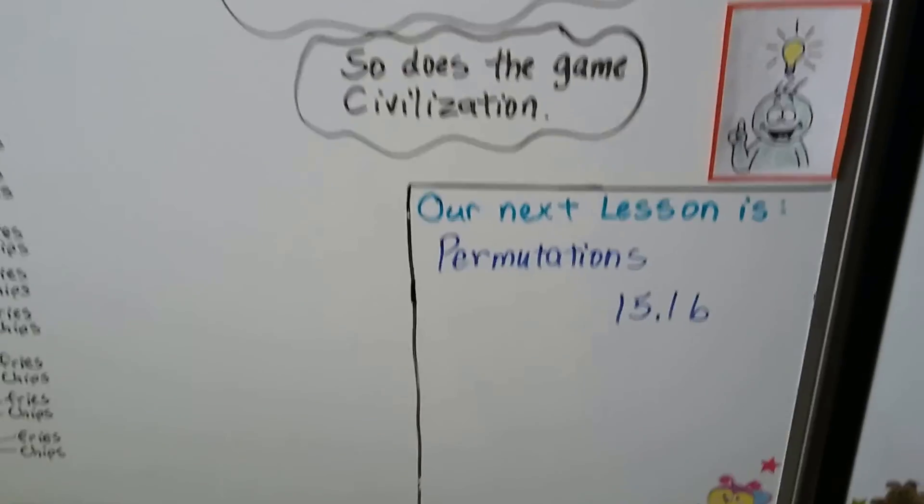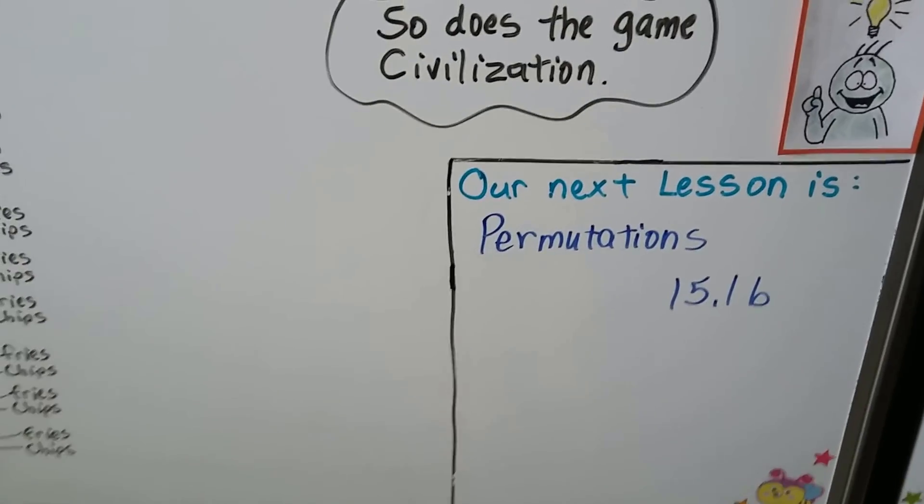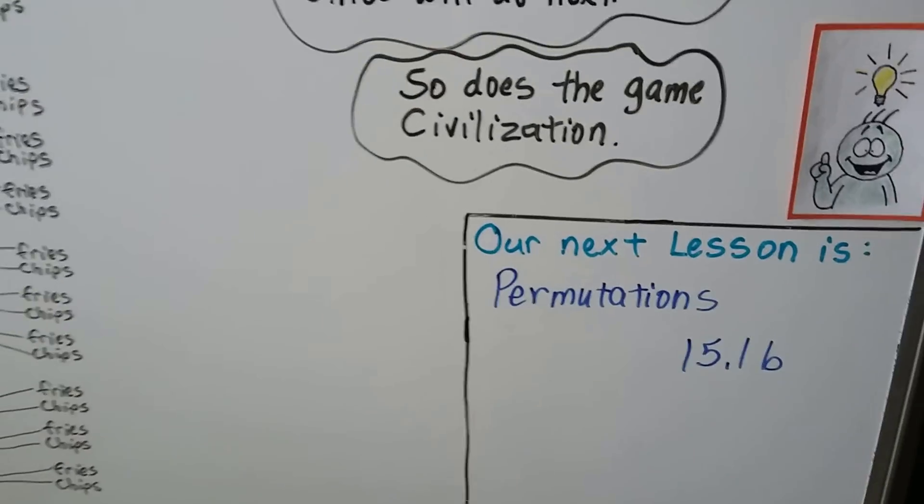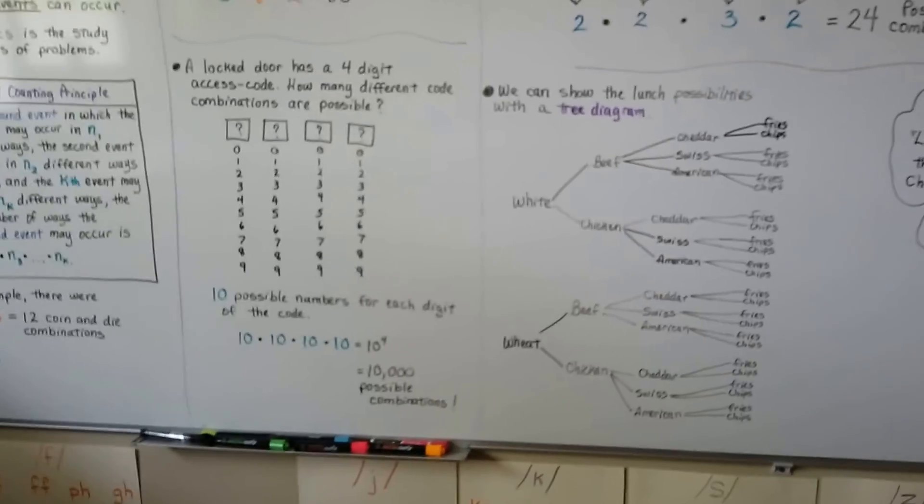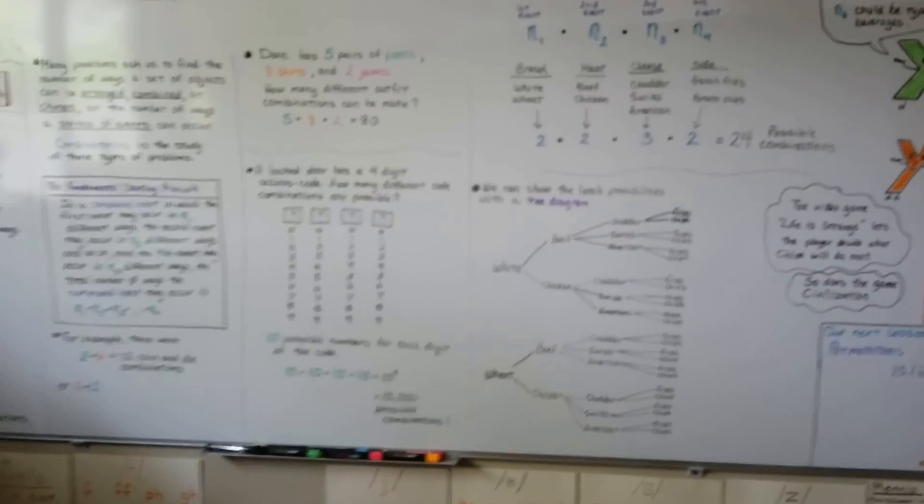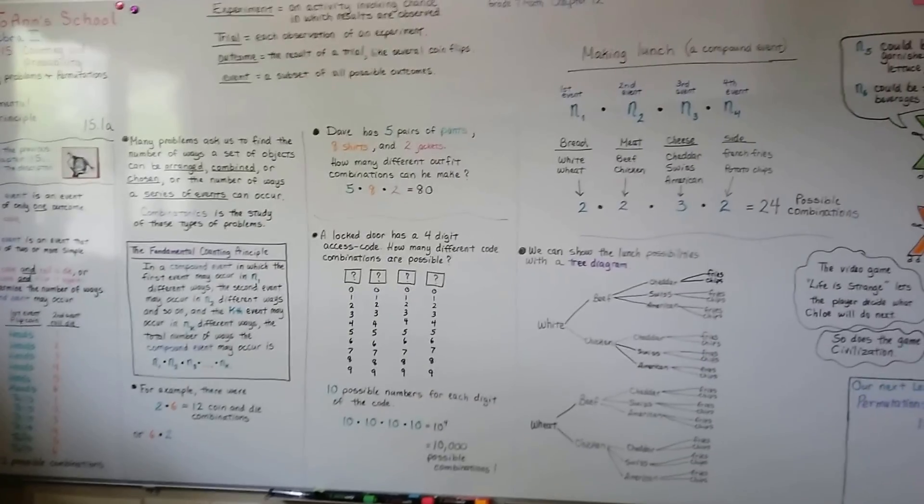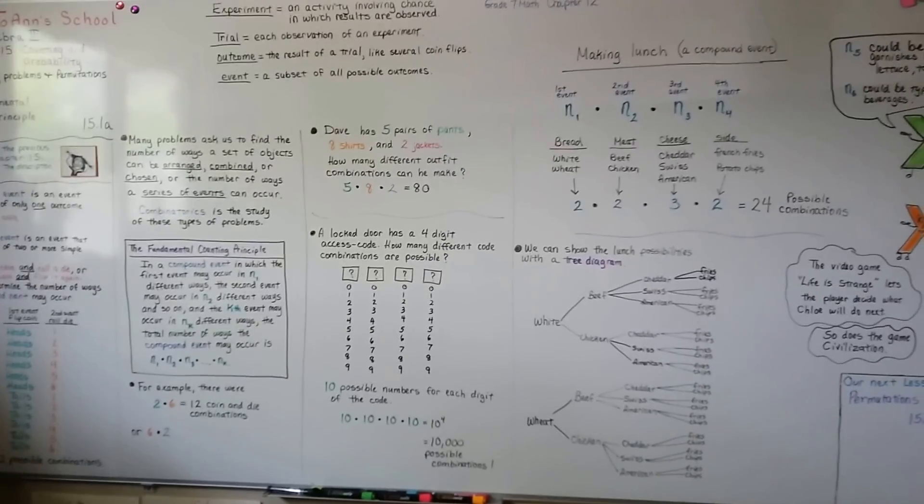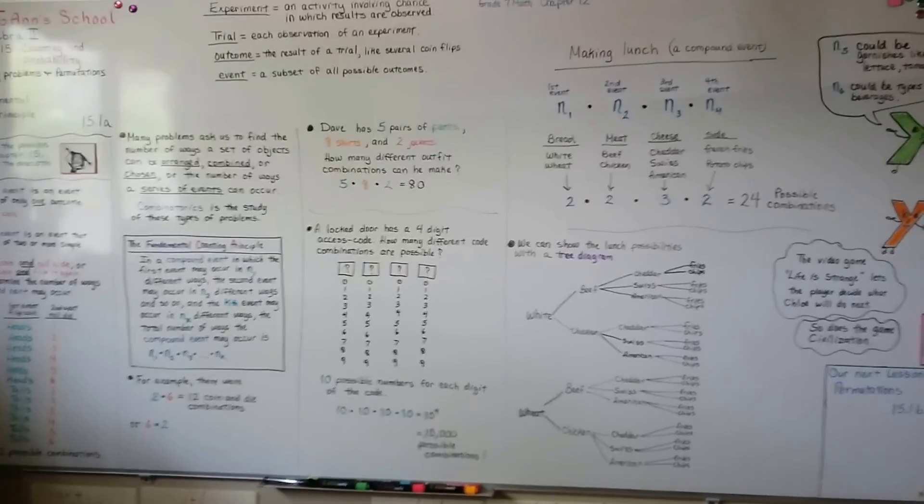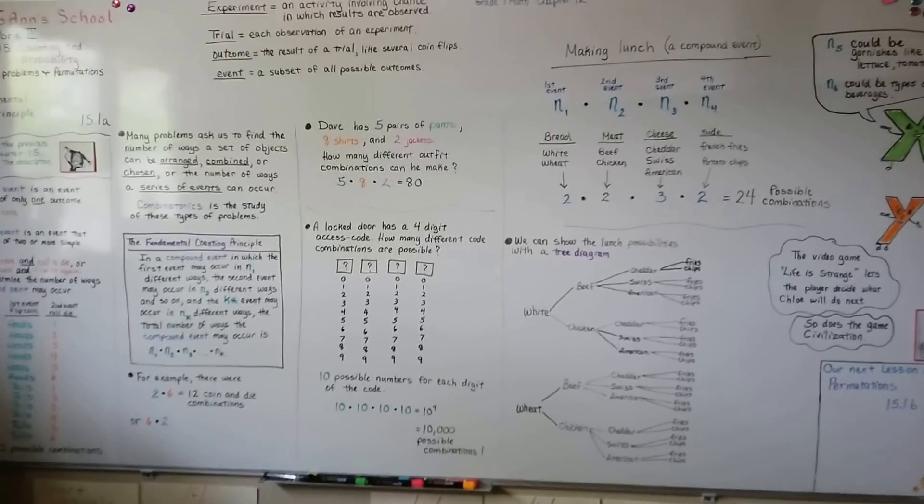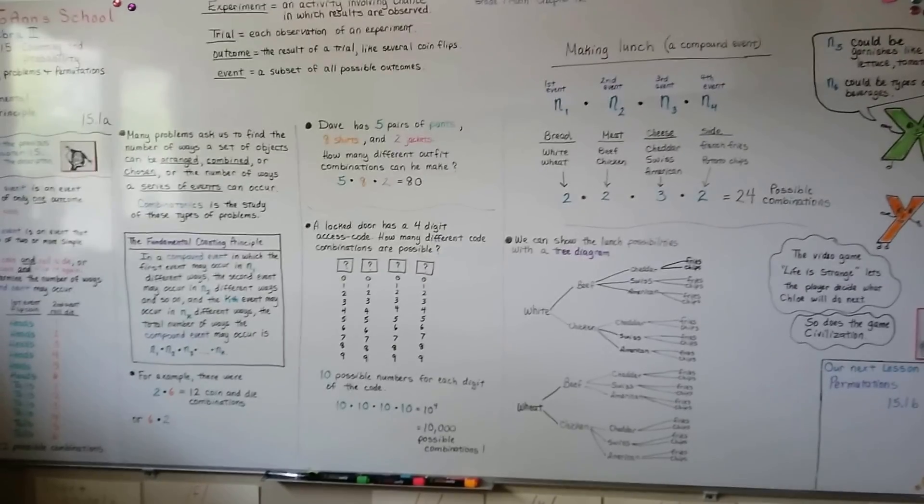Our next lesson is permutations. It's going to be 15.1b. And I hope that this made sense to you and you now understand the fundamental counting principle. It's fairly simple. We're just multiplying them. So I hope you have a great day and I'll see you next time. Bye.